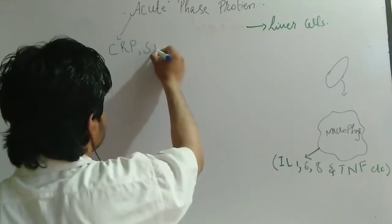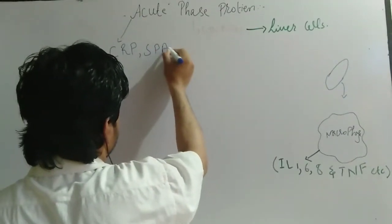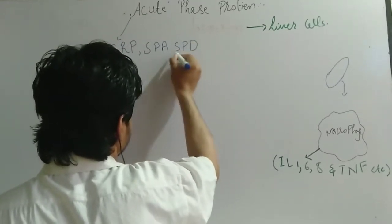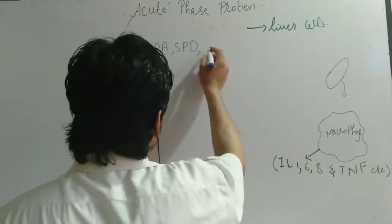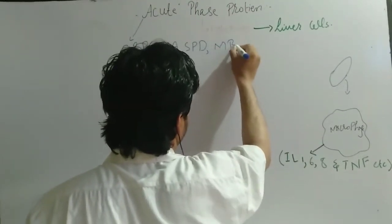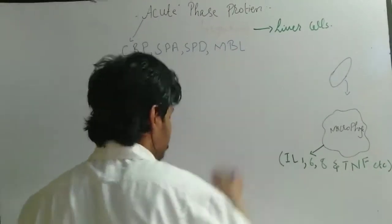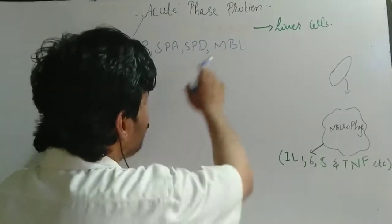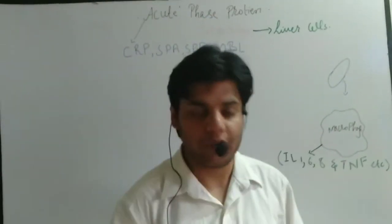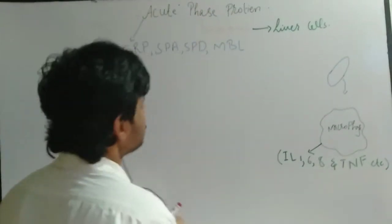Acute phase proteins usually include C-reactive protein, surfactant protein A and surfactant protein D. They also include mannose binding lectin proteins.